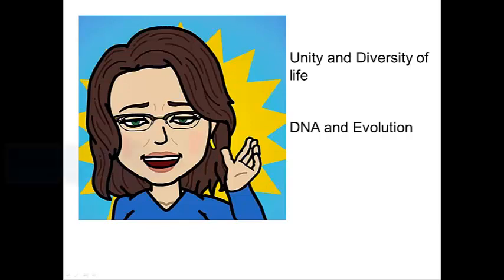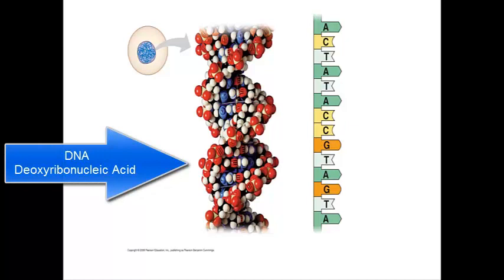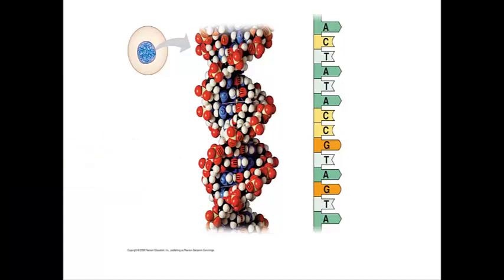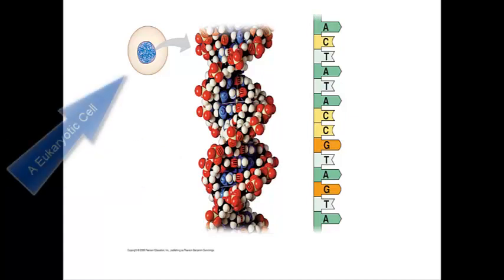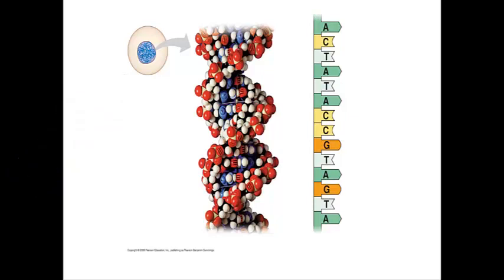Let's start with DNA. The model here represents DNA, and the unity of life is based on DNA structure. It's found in every cell, both prokaryotic and eukaryotic, and the genetic information is going to be used to control and regulate processes in the organism, especially in the cell.